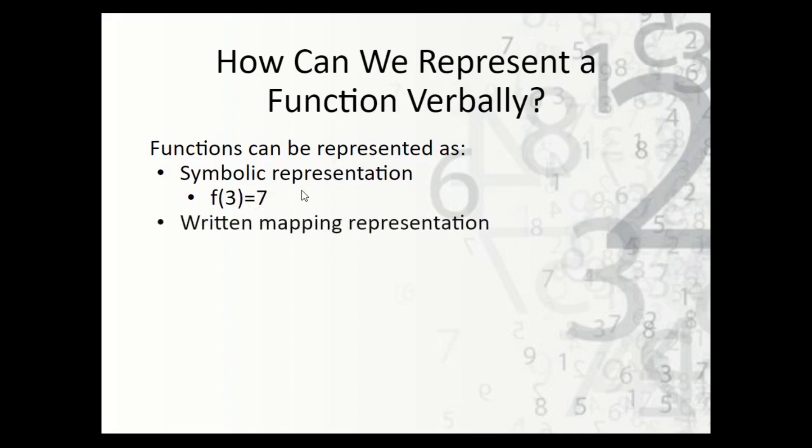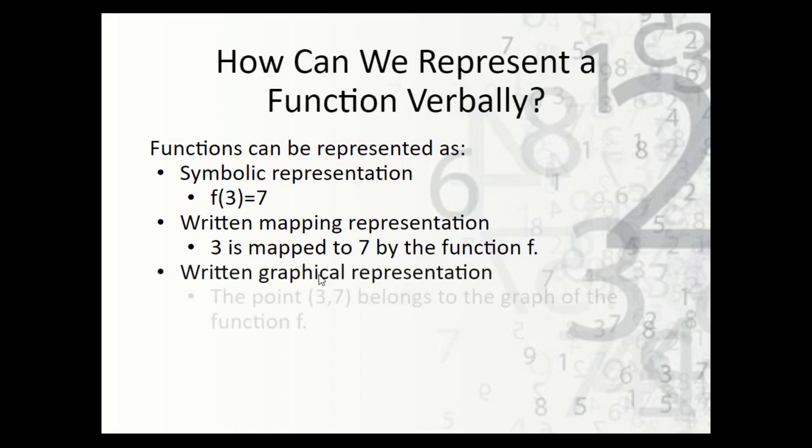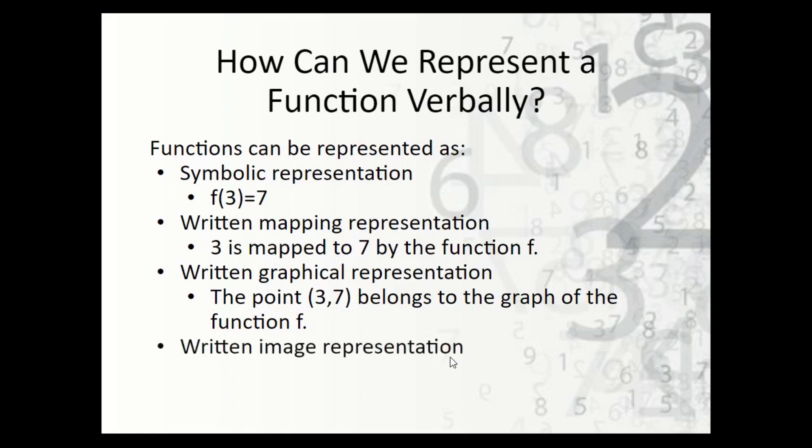We can write it as a mapping. So we could say 3 is mapped to 7, meaning that when we plug 3 in for x, we get 7. We can do it graphically. So the point 3, 7 belongs to the graph of function f. We could say it as an image. So 7 is the image of 3, meaning 7 is the result when we plug 3 in. It's just the backwards way of saying the mapping.